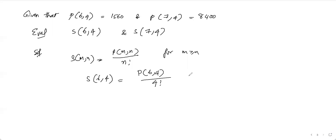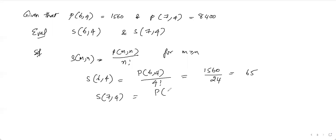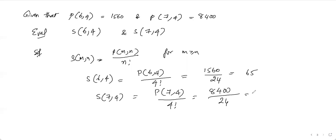So S of six comma four equals P of six comma four divided by four factorial, which is 1560 divided by 24, giving us 65. And S of seven comma four equals P of seven comma four divided by four factorial, which is 8400 divided by 24, giving us 350.